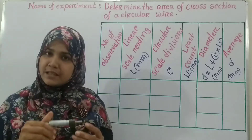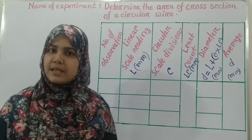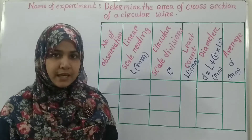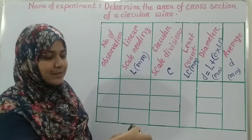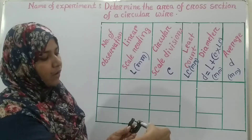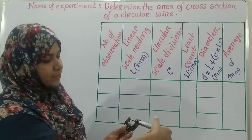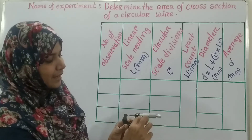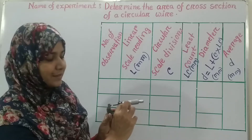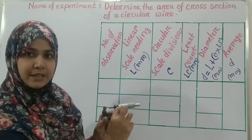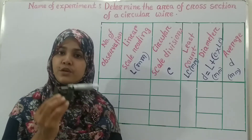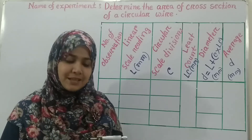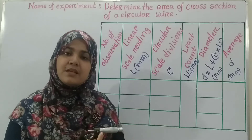In a screw gauge there are two scales: one is circular scale and another one is linear scale. The circular scale is the scale which is marked over this hollow-shaped cylinder, and the linear scale becomes visible when I move the circular scale. Now I am going to show this instrument closely so it will be easier for you to understand the circular scale and linear scale.